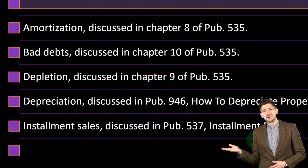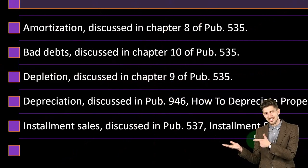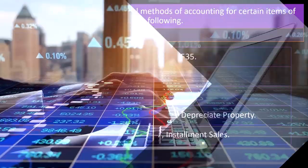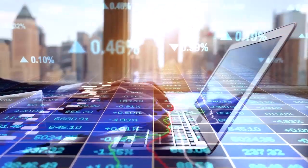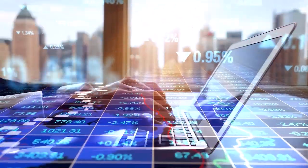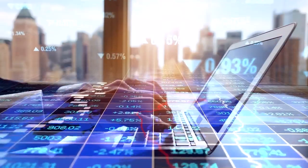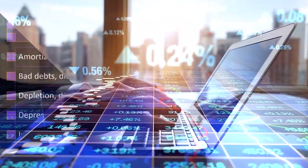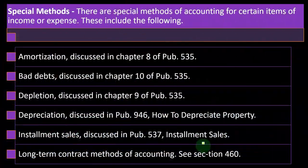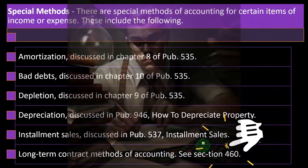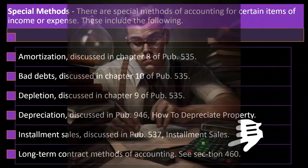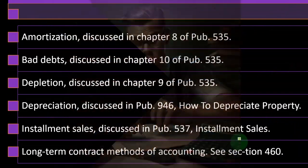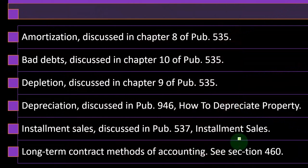Installment sales, discussed in Publication 537, are a special design of a sale for particular situations involving sales happening in installments. Long-term contract methods of accounting would be another industry-specific area, covered in Section 460.